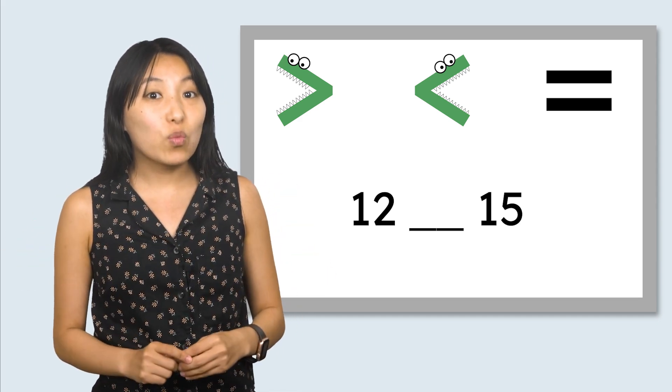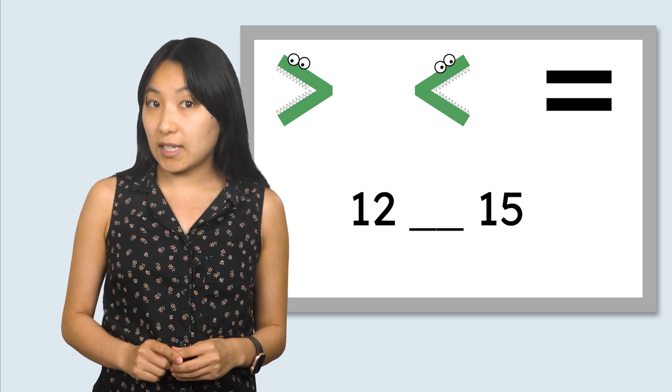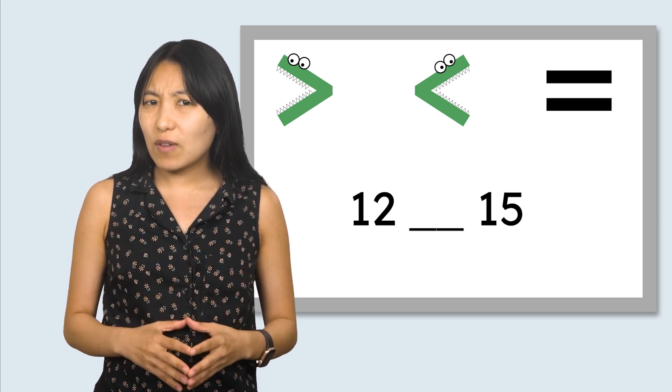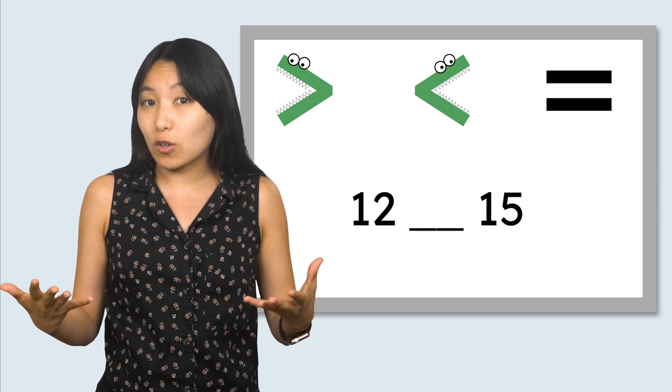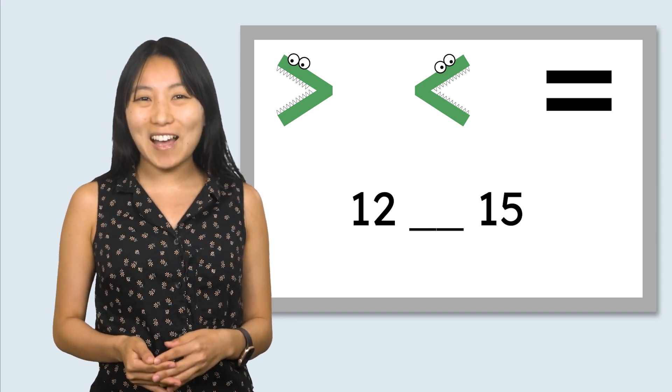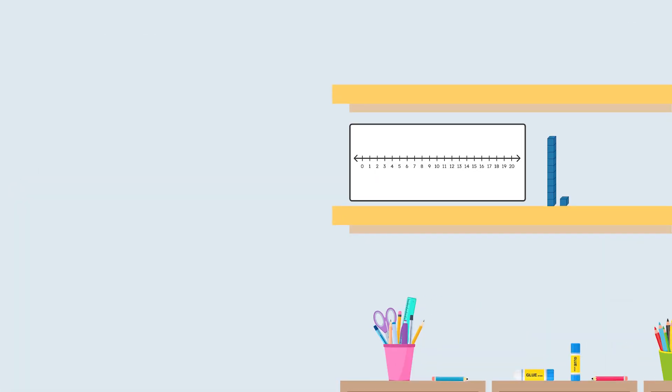Before we figure out which number the alligators are going to eat, we need to figure out which number is greater. There are a few math tools we can use to help us. The first tool we can use is a number line.